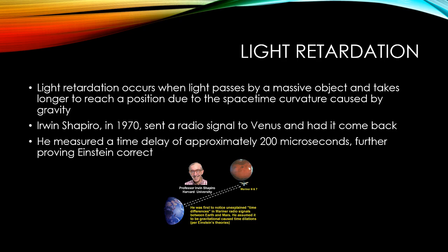Light retardation occurs when light passes by a massive object and takes longer to reach a position due to the space-time curvature caused by gravity. Erwin Shapiro sent a radio signal to Venus and had it come back, and he measured a time delay of approximately 200 microseconds, further proving Einstein correct.